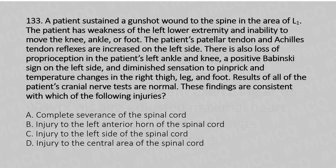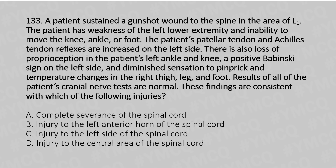Now let's move to Question 133. A patient sustained a gunshot wound at the spine in the area of L1. The patient has weakness of the left lower extremity and inability to move the knee, ankle, or foot. The patient's patellar tendon and Achilles tendon reflexes are increased on the left side. There is also loss of proprioception in the patient's left ankle and knee, a positive Babinski sign on the left side, and diminished sensation of pinprick and temperature changes in the right thigh, leg, and foot. Results of all cranial nerve tests are normal. These findings are consistent with which injury? Option A: Complete severance of the spinal cord. Option B: Injury to the left anterior horn of the spinal cord. Option C: Injury to the left side of the spinal cord. Option D: Injury to the central cord. And the answer is Option C, injury to the left side of the spinal cord.